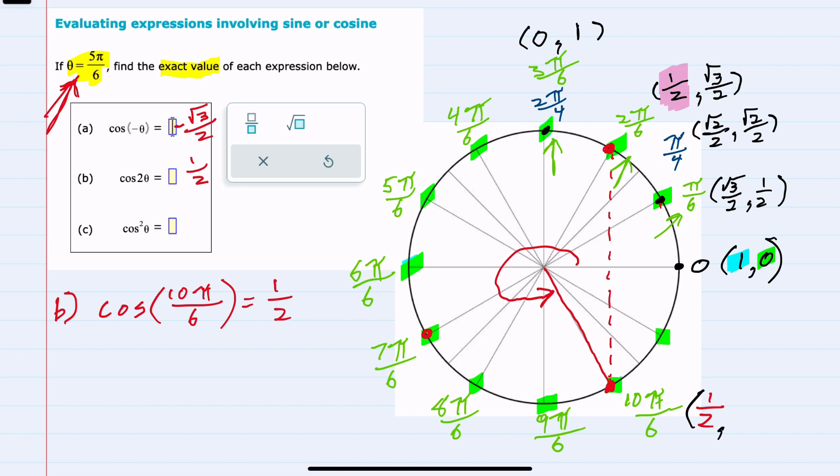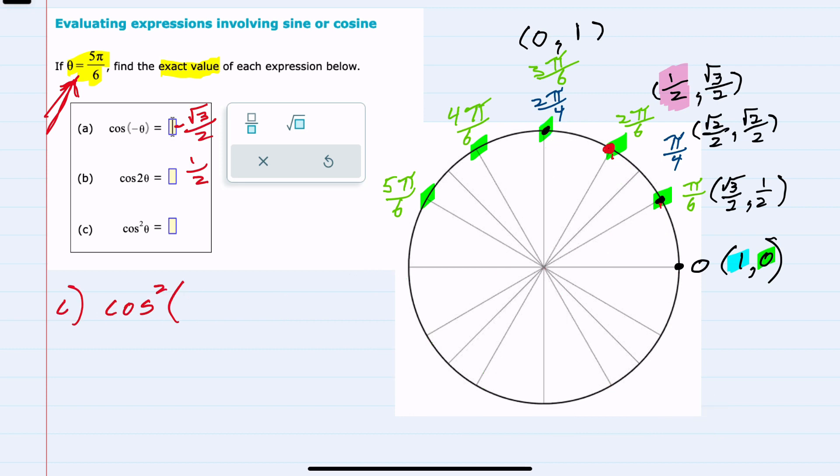Lastly, I'll move to c. c is the cosine squared of theta. And again, theta is 5π/6. And since it's the cosine squared, you can think of this as just the cosine of 5π/6 being squared. We already have 5π/6 labeled here. It's one of our multiples of π/6. And again, we're going to need the cosine value to find the cosine squared.